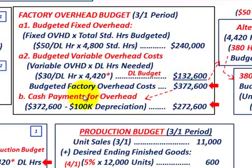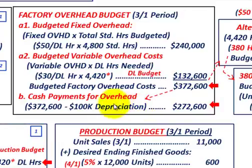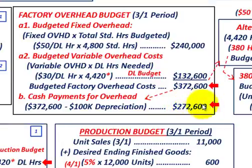For cash payments, we subtract the non-cash portion — in this case $100,000 for depreciation — from the total factory overhead costs. So $372,600 minus $100,000 equals $272,600. That's the cash payment amount we'll actually have to pay for factory overhead.